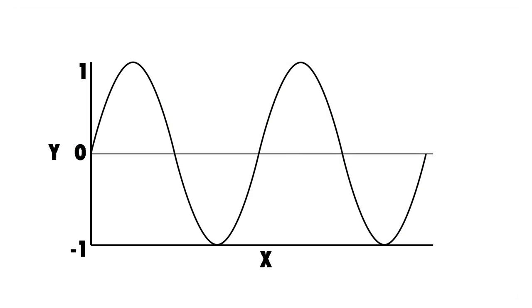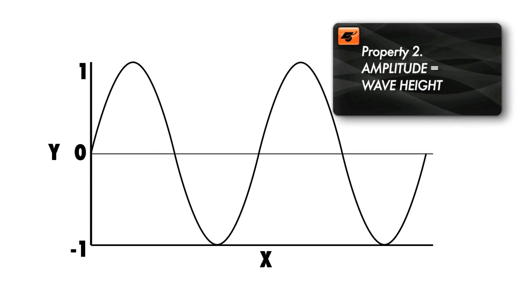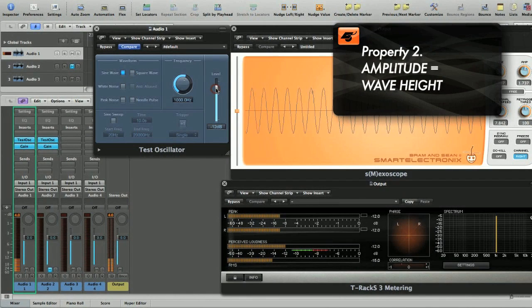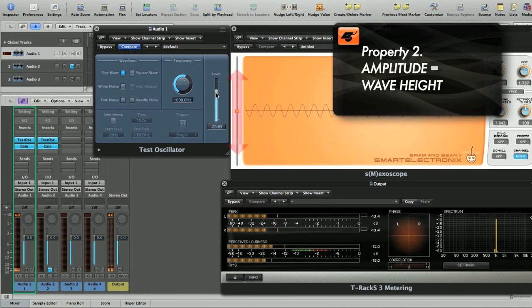The next thing to consider is a waveform's amplitude. This is simple. The higher the peak, the higher the amplitude, and therefore the stronger and louder the signal is.